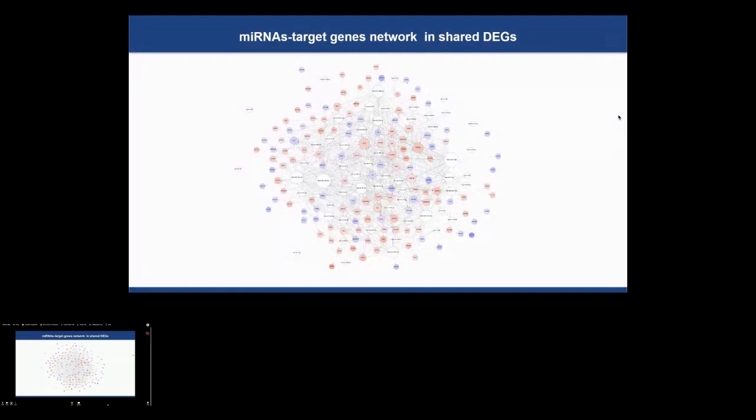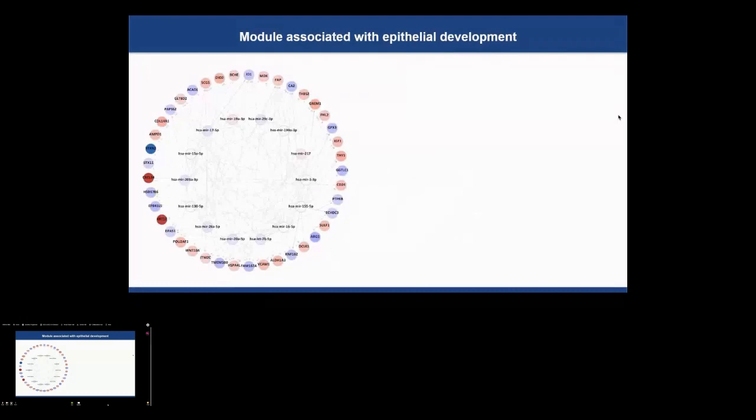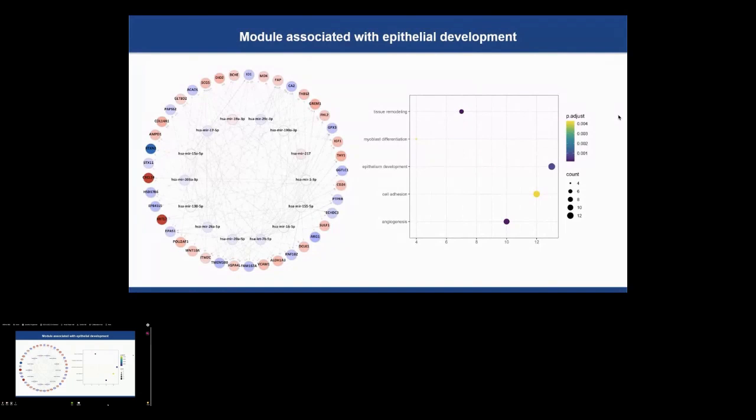Module one was composed of 41 genes which present an enrichment in 387 Gene Ontology biological processes, such as tissue remodeling, angiogenesis, vascular development, epithelial development, and myofibroblast differentiation. In addition, 14 microRNAs are associated with this set of genes.